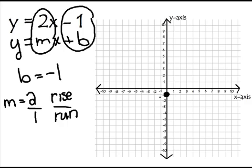So what I do is I start from my y-intercept, I start from negative 1, and I rise 2 — I go up 2 — and then I run 1. And I put another dot. Let's do that again: I go up 2 and run 1. And I can keep doing that — up 2, over 1 — forever and ever.